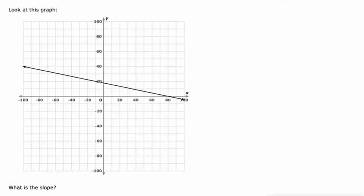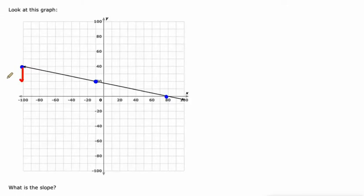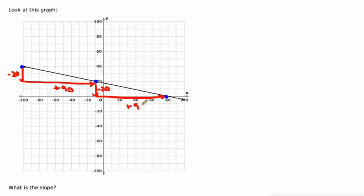So far we've just looked at the first quadrant, but this graph deals with all four quadrants on the coordinate plane. This one's kind of tough because it's difficult to identify which points the graph crosses. But I'm pretty sure negative 10, 20, and then the next clean point I see is at 80, 0. Here it goes down from 40 to 20 — down 20 — and then over from negative 100 to negative 10, that's an increase of 90. And again, down 20, and then from 10 to 80, that's an increase of 90. So our slope is negative 20 over 90, which equals negative 2 ninths when we simplify it.